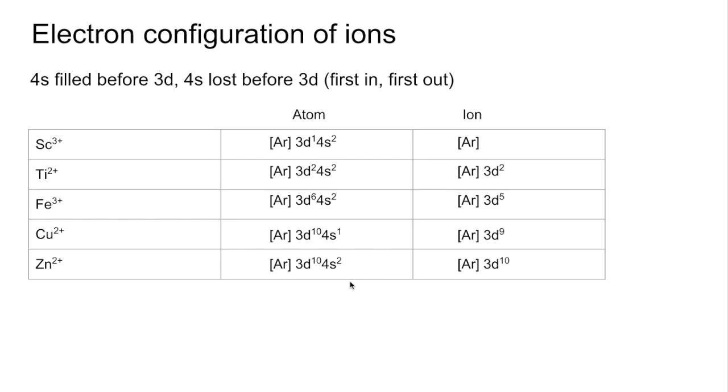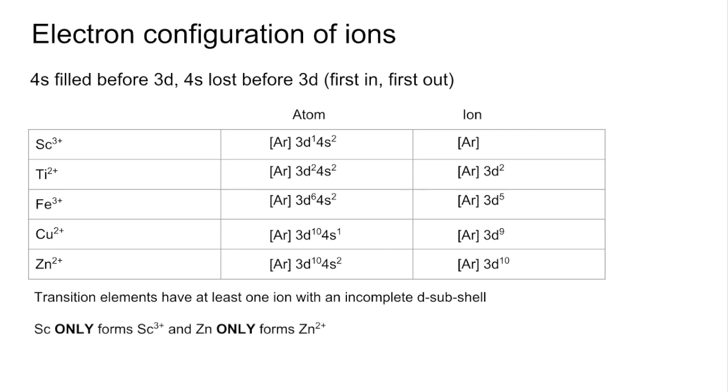Now we've done this, we can look at the definition for transition elements. Transition elements are defined as having at least one ion with an incomplete D subshell. You need to know that scandium only forms the 3 plus ion and zinc only forms the 2 plus ion.